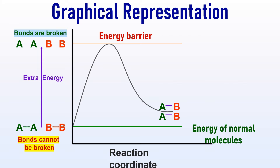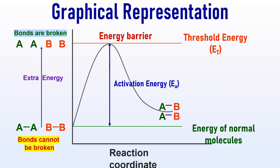The difference between the energy of normal molecules and this energy barrier is known as activation energy. It simply represents the additional energy required by the regular molecules to surpass the energy barrier. The energy barrier represents the minimum amount of energy that should be possessed by the molecules to undergo a chemical reaction, and this is normally referred to as threshold energy.